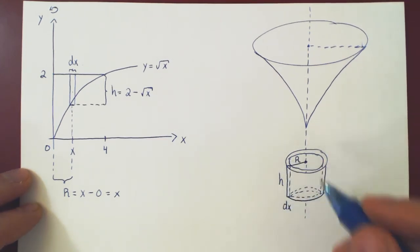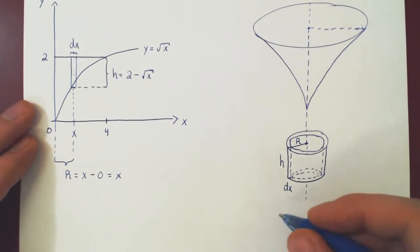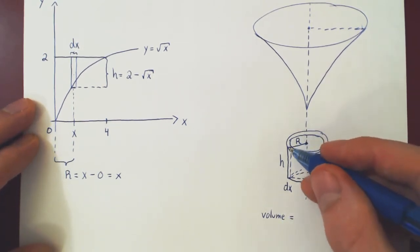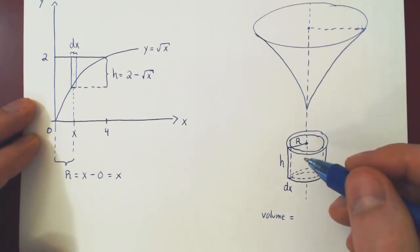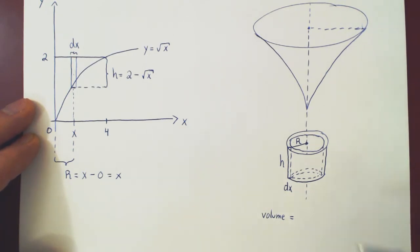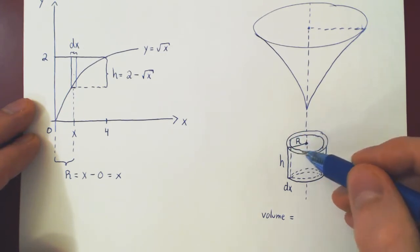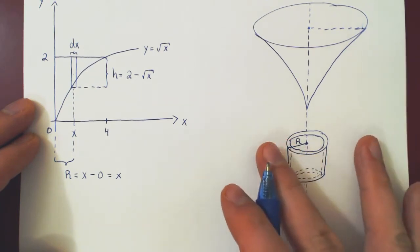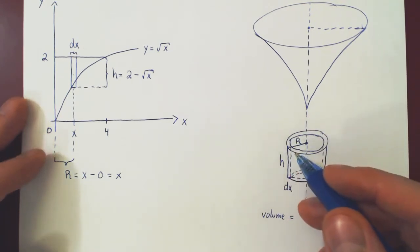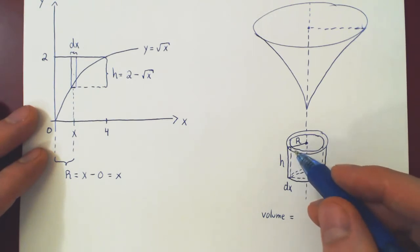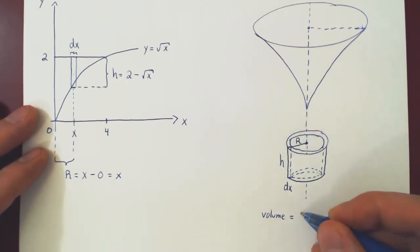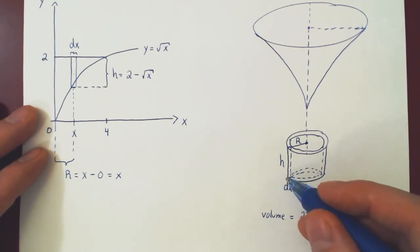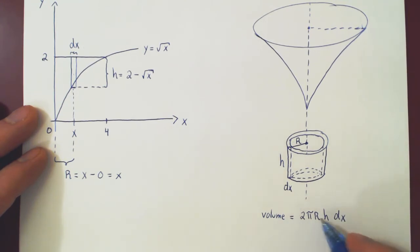Now we can find the volume of this cylindrical shell. There is a nifty trick: think of it as an aluminum can with no top and no bottom. With a pair of scissors, cut through one side, press it flat, and the can becomes a rectangle. The area is height times length, where the length is the circumference 2 pi r. Times the height gives the area of the rectangle, and times the thickness dx gives the volume of the cylindrical shell.